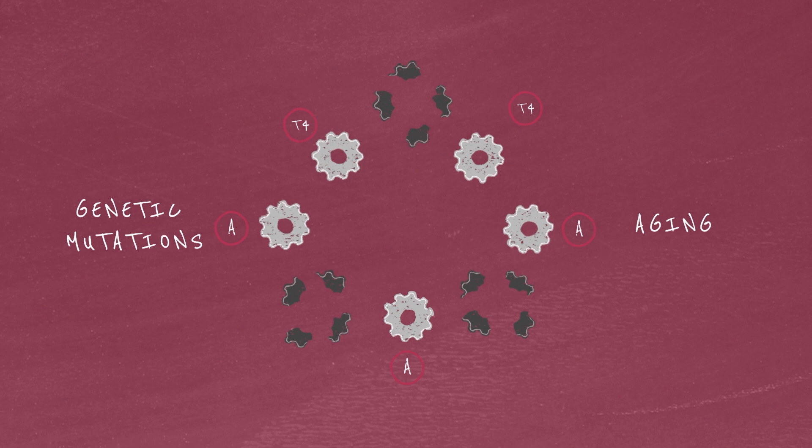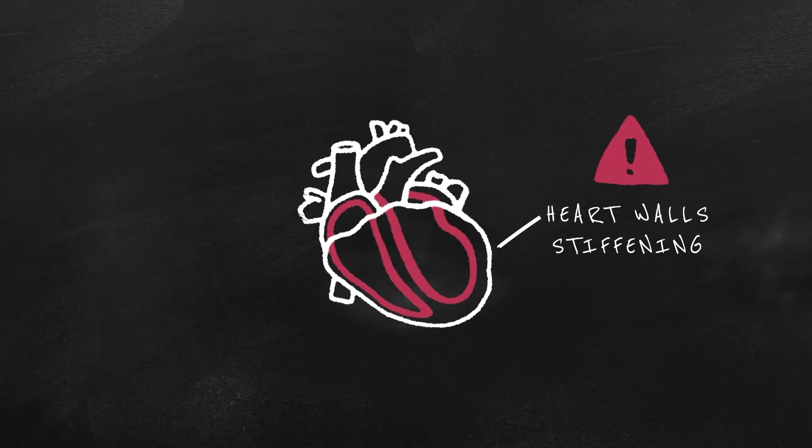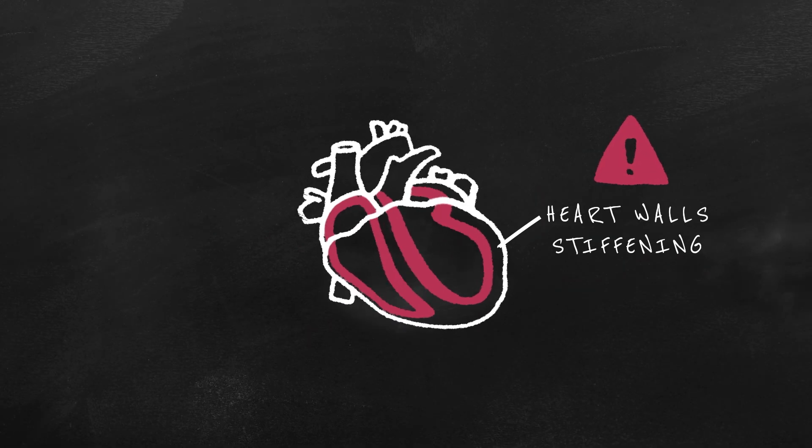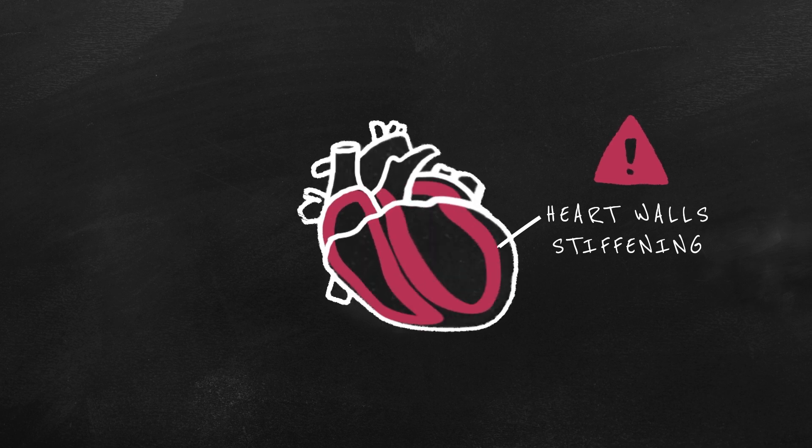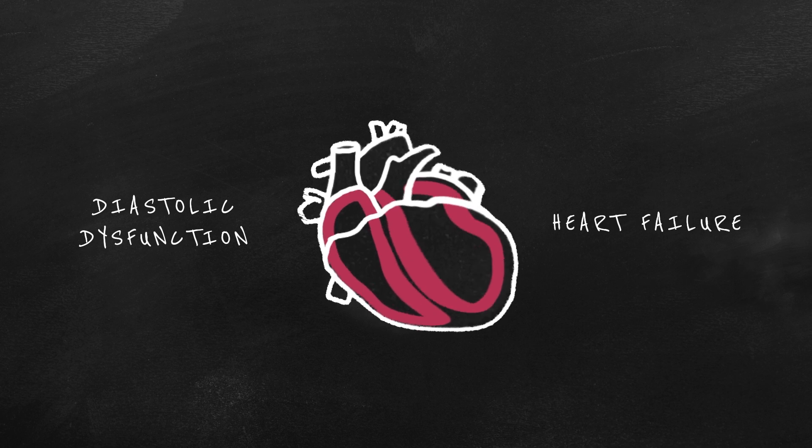forming toxic amyloid fibrils which build up in the heart muscle. These amyloid deposits lead to the thickening and stiffening of the heart's walls. Eventually, the heart is unable to properly relax and pump, resulting in diastolic dysfunction and heart failure.